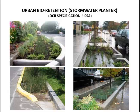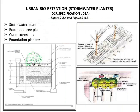DCR specification 9A also covers their feasibility and design applications, regional and special case design adaptations, and their construction and maintenance. The pictures and tables shown here are from these specifications. Urban bioretention facilities are structures such as stormwater planters, expanded tree pits, curb extensions, and foundation planters located in ultra-urban developed areas such as city streetscapes.